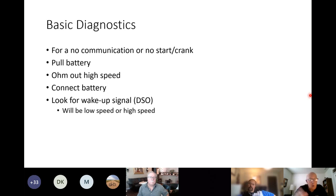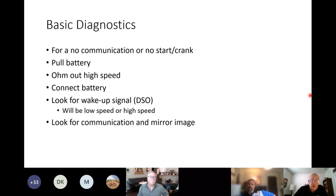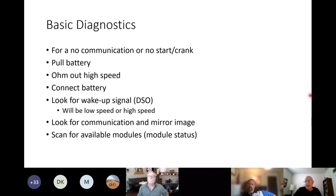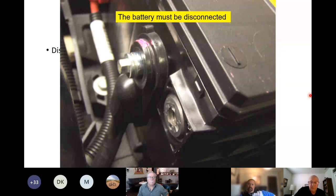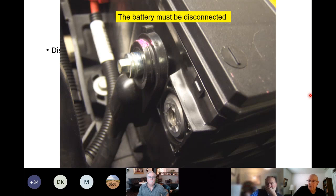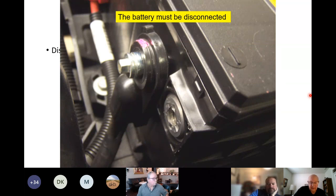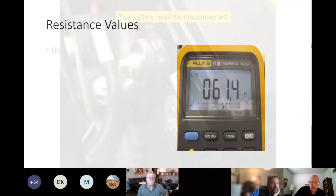Once we're done with the multimeter, we connect the battery, then switch to a two-channel DSO — at least two channels, though four or more is fine. On one channel we're looking for a wake-up signal, then we look for a mirror image. After that, we scan for available modules or module status. So the sequence is: disconnect battery, measure resistance, reconnect battery, DSO for wake-up and mirror image, then scan.